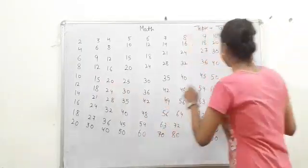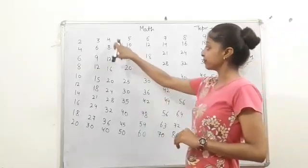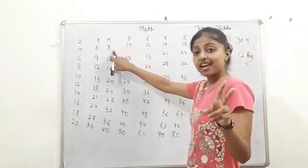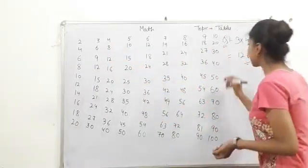And similarly, 4 threes are. So, you have to say something. 4 threes are. 4 ones are 4, 4 twos are 8, and 4 threes are 12.